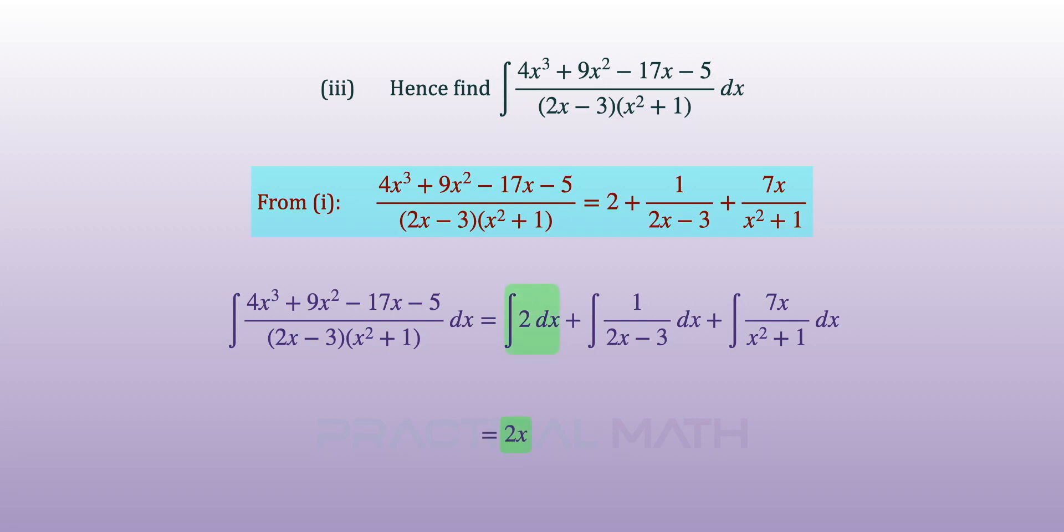So, integrating 2 will give us 2x. Since integration is the reverse of differentiation, integrating f prime of x divided by f(x) will give us ln of f(x). So, integrating 1 over 2x minus 3 will give us half of ln(2x minus 3). Similarly, from part 2 of the question, integrating 2x divided by x squared plus 1 will give us ln of x squared plus 1.